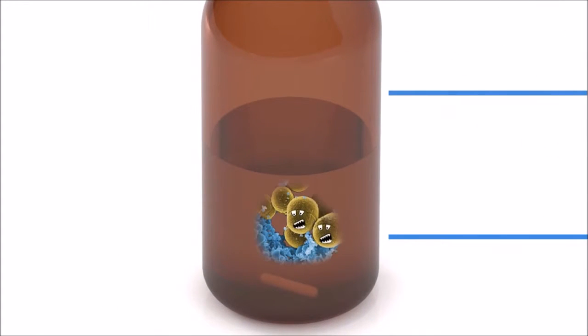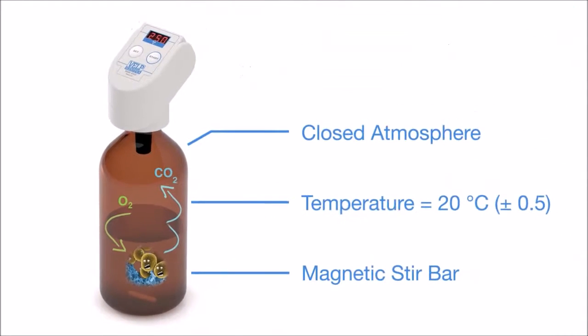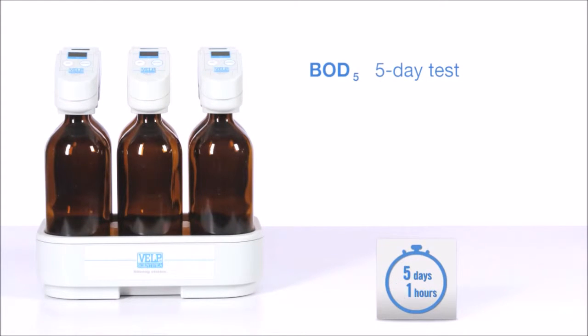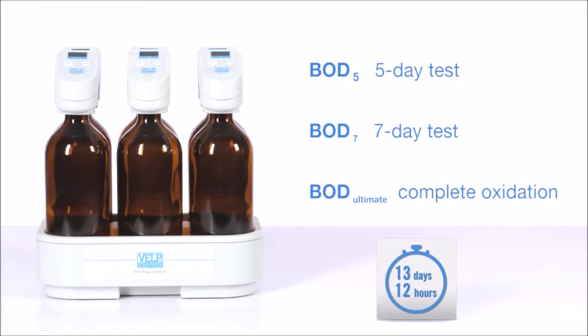The measuring principle consists of determining the oxygen concentration at the beginning and end of a measurement period. The typical analysis is BOD-5, a 5-day incubation test. Longer measurement times are also used, such as BOD-7, a 7-day test, and BOD-Ultimate for the complete degradation of organic substance.